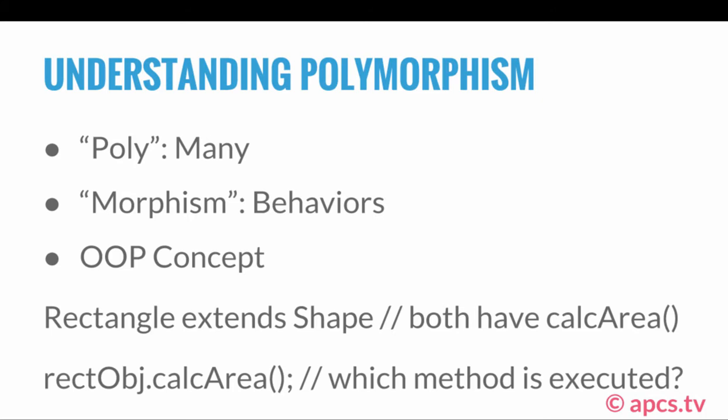In order to understand exactly what polymorphism is, we have to break it into different parts. First, let's look at the 'poly' part — poly means many, and 'morphism' means behaviors. So combined, polymorphism means many behaviors. Polymorphism is an object-oriented programming concept; in essence, it means something like a method can have many behaviors even though there's only one method.